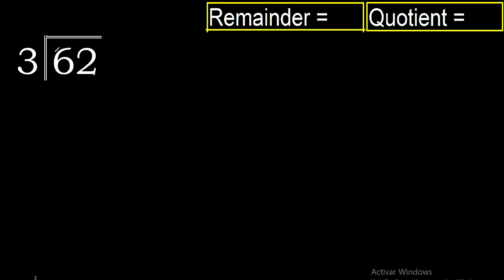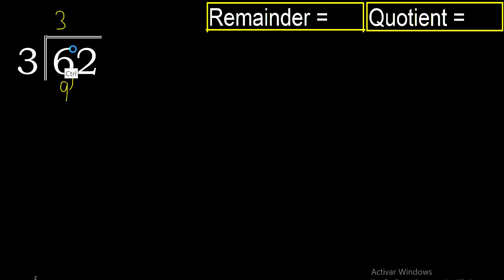62 divided by 3. 6 is not less than 3, so with 6: 3 multiplied by 3 is 9, which is excessive. 3 multiplied by 2 is 6 — 6 is the closest.